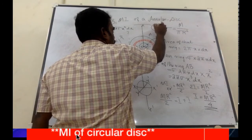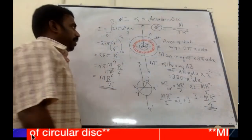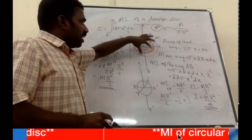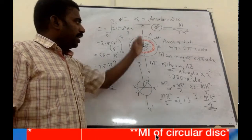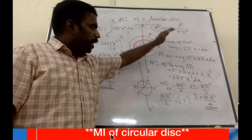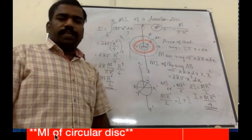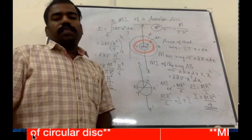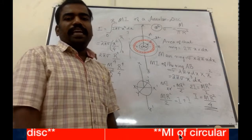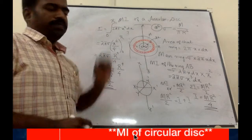This is the outer radius and this is the inner radius. We have to consider a ring element — the same procedure as for a solid disk. We are going to integrate this ring from the inner radius small r to the outer radius capital R.